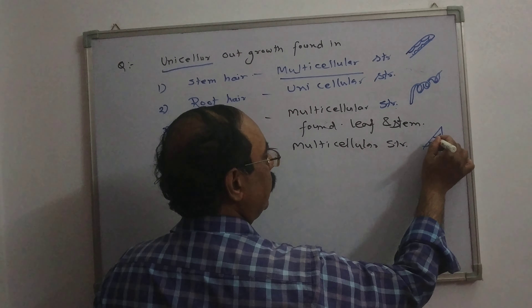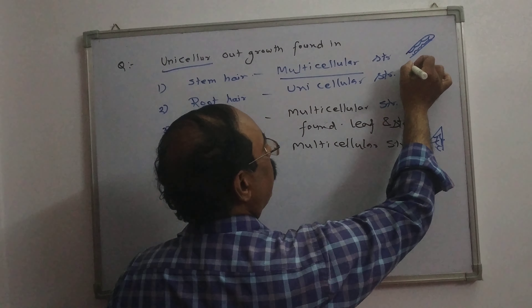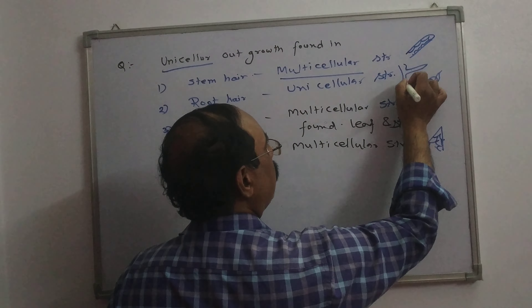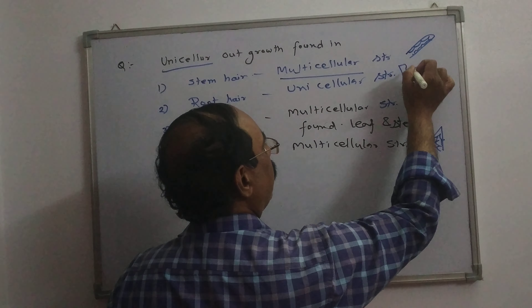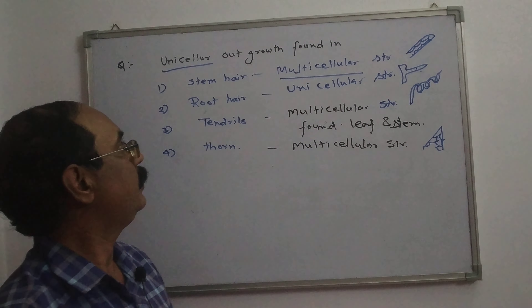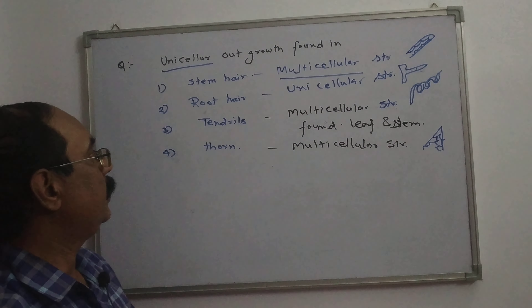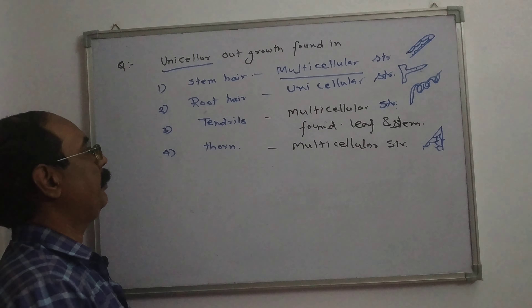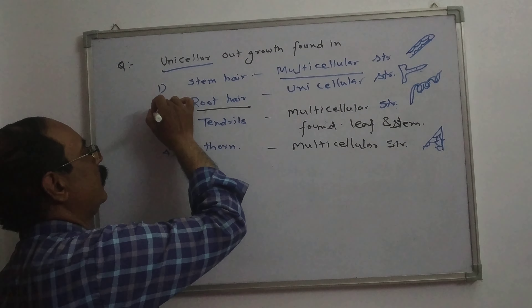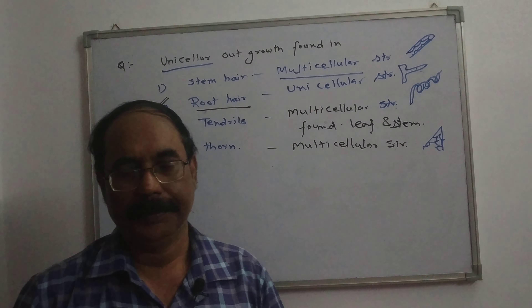So this unit is the root hairs, and this is the absorption of the water. So this unit is the root hairs, and the root is the root.